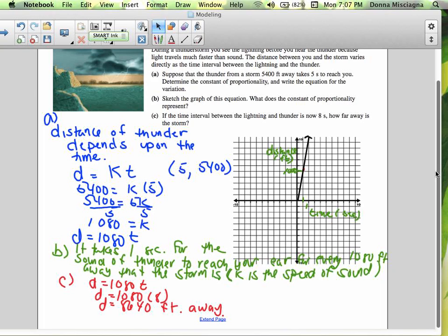So yes, K does refer to in this problem, it takes one second for the sound of thunder to reach your ear for every 10,080 feet away you are from where the storm is, but what that means is that K is the speed of sound.